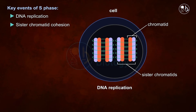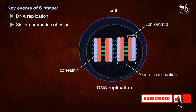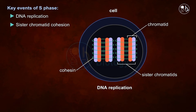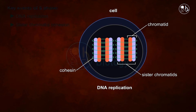Cohesion helps hold the sister chromatids together, and the protein complex responsible for linking the sister chromatids together is called cohesion. After completion of the duplication of all the DNA or genome, the cell has successfully passed the G2 gap phase.